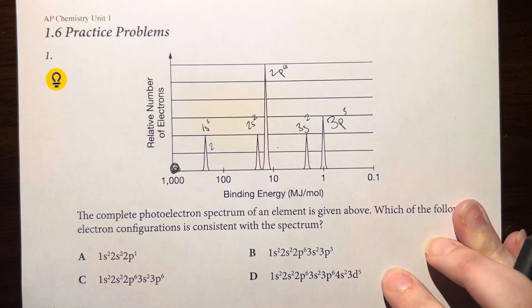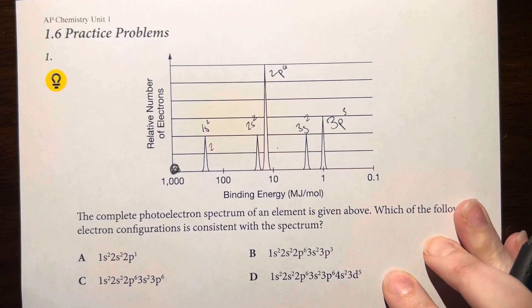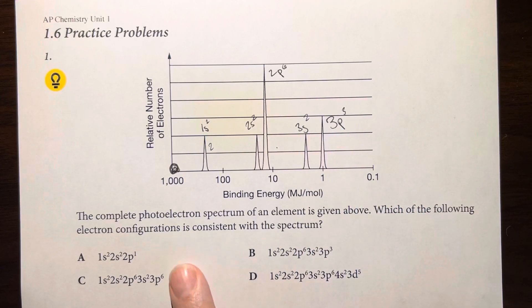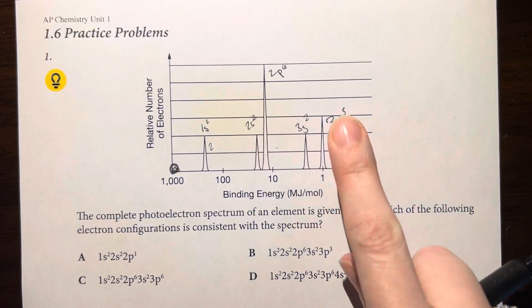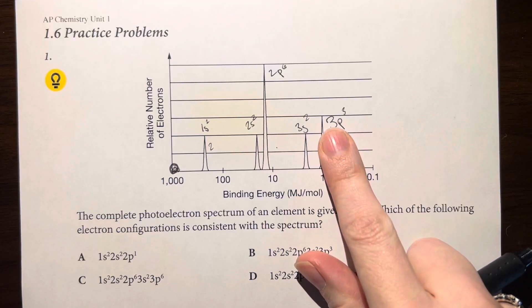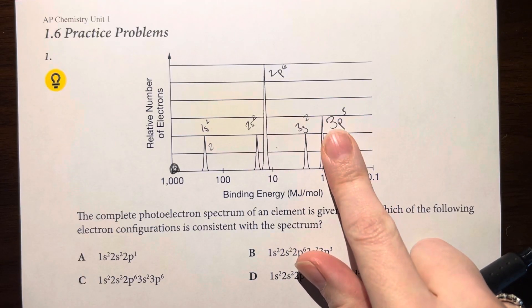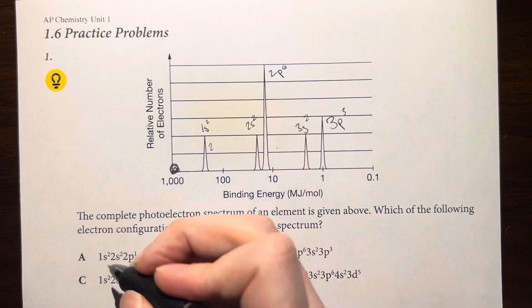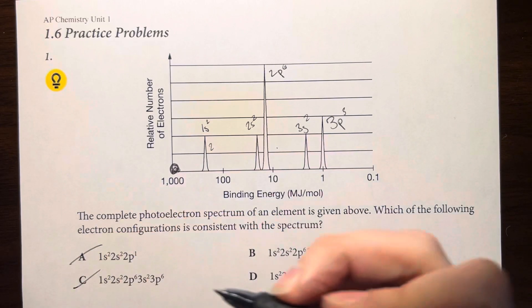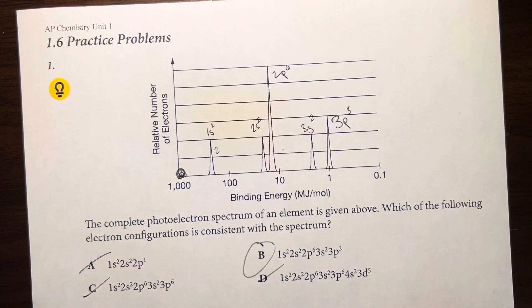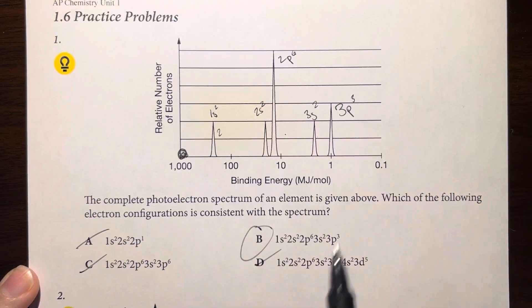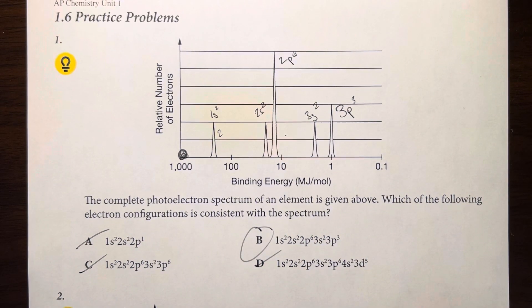I just need to match what I've identified with the electron configurations offered. My last sublevel is 3p with 3 electrons, so I can eliminate everything other than option B, which matches my predicted electron configuration perfectly.